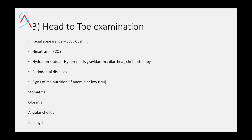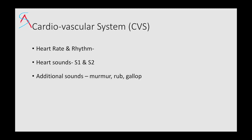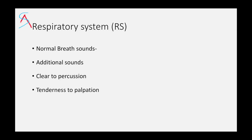Look for any signs of malnutrition. In other system examination, first look at the cardiovascular system — mention the heart rate, rhythm, heart sounds S1 and S2 heard or not, and any additional sounds like murmur, rub, gallop, or click. Then in the respiratory system, mention normal vesicular breath sounds heard, no additional sounds, chest clear to percussion, and no tenderness to palpation. Tenderness could be present in empyema.